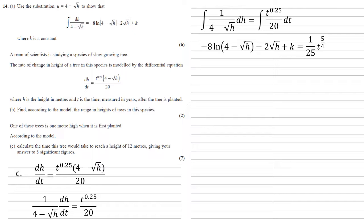Now we need to work out what k, our constant, is, but we're told in the question that the tree is 1 metre high when it's first planted. So at t equals 0, the time when it's first planted, h is equal to 1. So let's substitute these in. We get minus 8 log natural 4 minus root 1, which is 3, minus 2 lots of root 1, so 2, plus k equals 0, because we've substituted t equals 0 into there. So rearranging that gives us that k equals 8 log natural 3 plus 2.